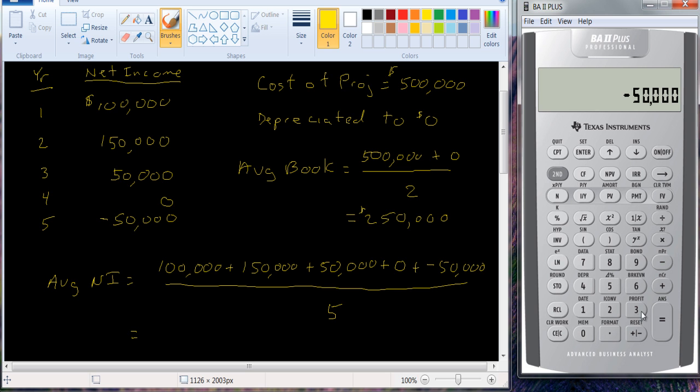We need to change that sign to negative, so we get 250,000 divided by five, so we get an average net income of 50,000.